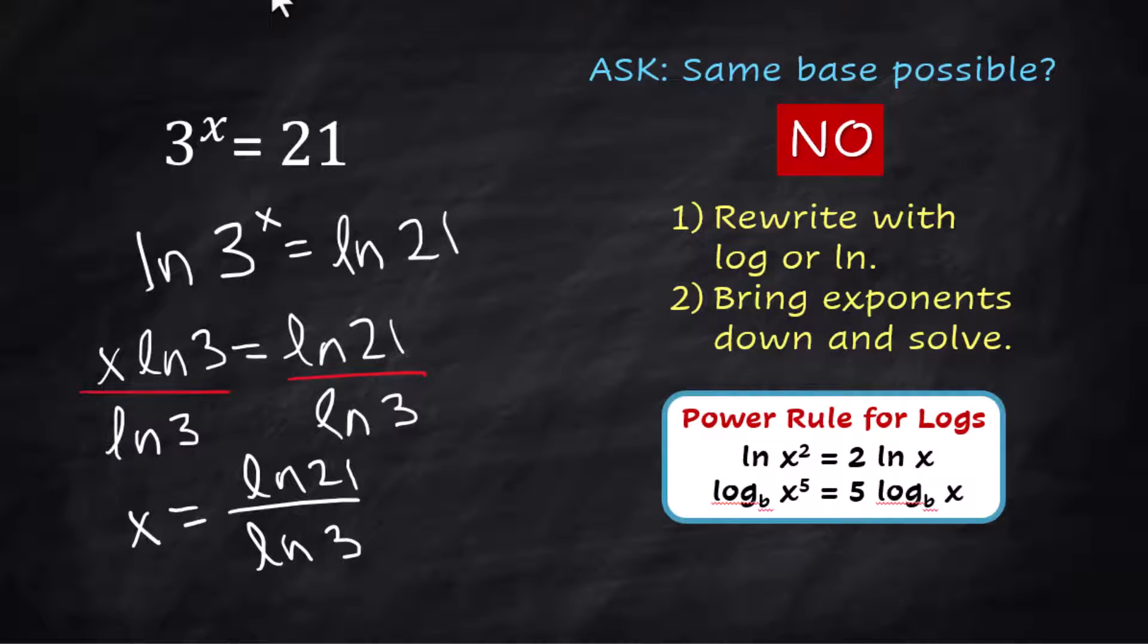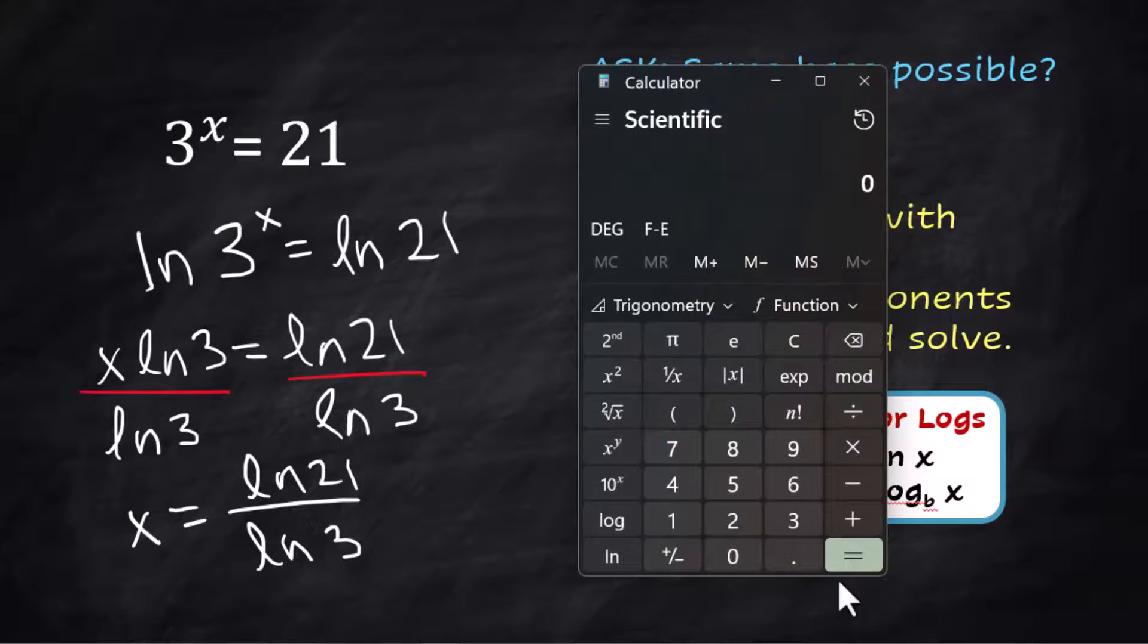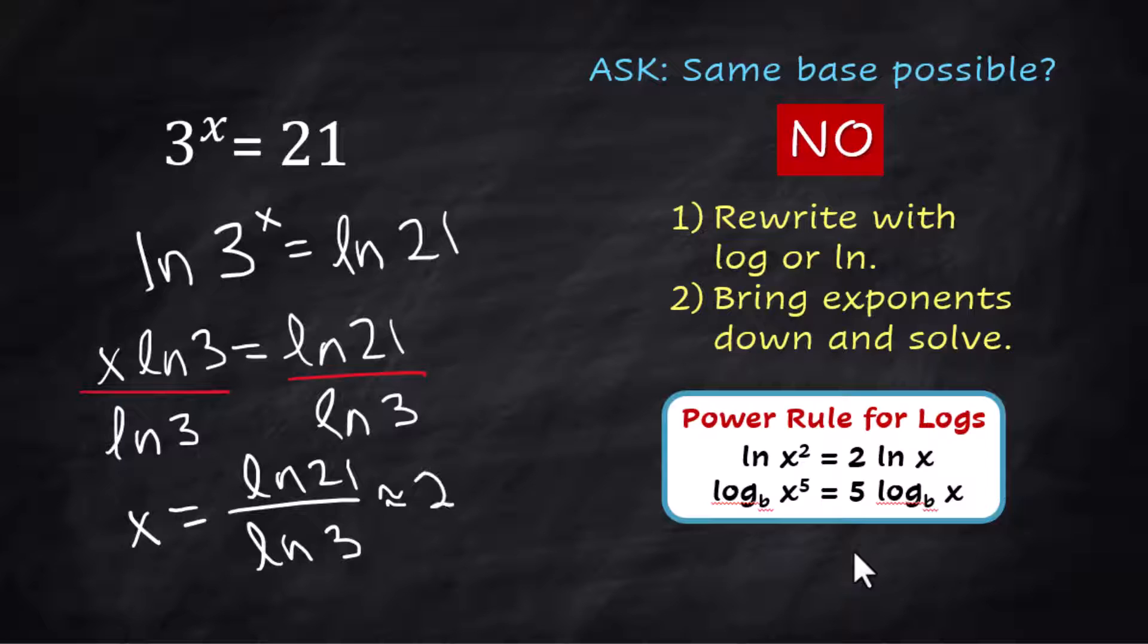x = ln(21)/ln(3). That's an exact answer. If you need to use a calculator, you can do that as well, approximately equal to 2.771. When I was teaching, I liked the exact answer more than the decimal.